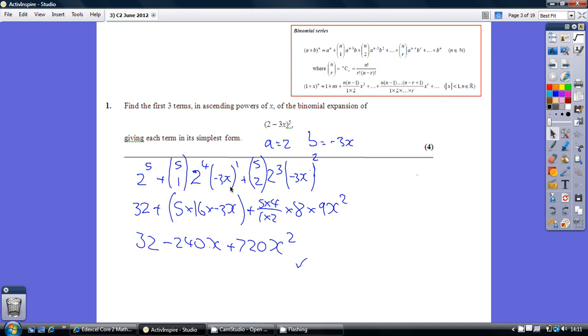And our third term is 5 choose 2, 2 to the power of 3, and minus 3x all squared. Now make sure you've got minus 3x all squared. Minus 3x times minus 3x is plus 9x squared.